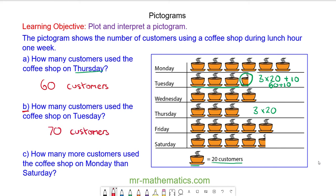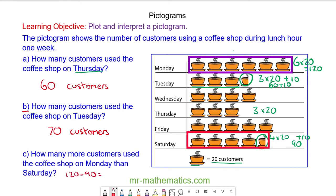And for question C, how many more customers use the coffee shop on Monday than Saturday? On Monday we have six lots of 20 which is 120. And on Saturday we have four lots of 20 plus the half which is 10. So this is 90. And the difference between the two is 30.